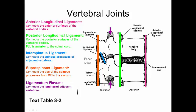These are the ligaments associated with these joints. You have the anterior longitudinal ligament, which is anterior to the vertebral body. You have your posterior longitudinal ligament, which is posterior to the vertebral body. The most posterior ligament is the supraspinous ligament, which is posterior to the spinous processes.